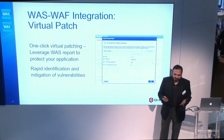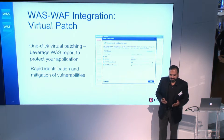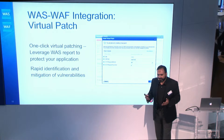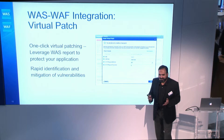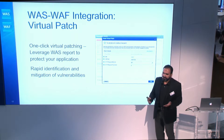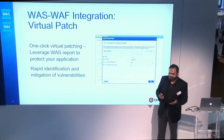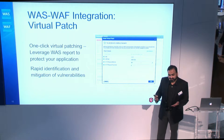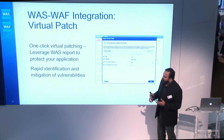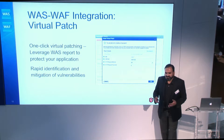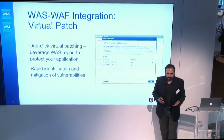The third problem: say you bought a WAF — how do you test whether it's effective or not? Typically you'd write your own scripts to do that testing. But what if you had a comprehensive scanning tool that could mount a bunch of attack vectors against your web application and actually see what your WAF would do if those attacks came through? That's the third problem. The fourth problem is that there are too many systems to manage — that's another problem we're looking to solve.